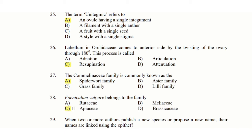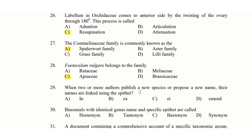29th question: In binomial nomenclature, the genus name and specific epithet names are linked using — option A: in, option B: x, option C: h, option D: and. The answer is option C.